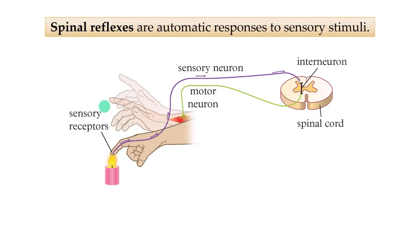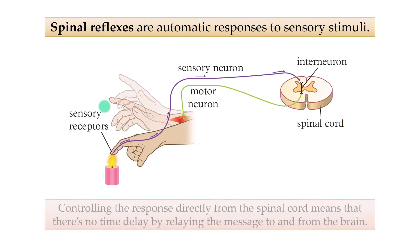These automatic responses ensure there's no time delay from having to relay the message to and from the brain. Input from the sensory neuron does a quick u-turn here in the spinal cord and straight out again to the motor neuron, bypassing the brain.